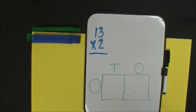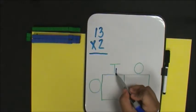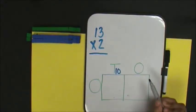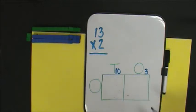Now let's create an open array. I have a box that shows my tens and ones and my ones. 13 is composed of 1 ten and 3 ones. 2 is composed of 2 ones.